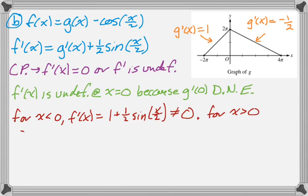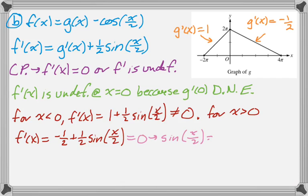So let's look at the other side. When x is greater than 0, f prime of x is, well, g prime now is negative 1 half, and then plus 1 half sine of x over 2. So we need that to be equal to 0, and that leads us to sine of x over 2 being equal to 1. And then if you think about the unit circle, the only place sine is equal to 1 is at π over 2, which means that x must be equal to π.